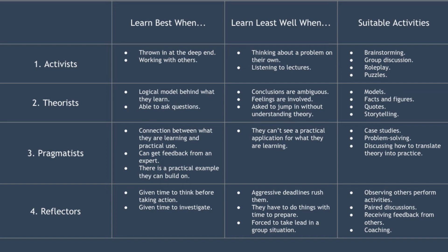Finally, we have reflectors. These are people who learn best when they can observe others and think about what they've just observed. They avoid jumping straight in and prefer to watch first. They like to collect data from many sources and perspectives, then think about it thoroughly before reaching any conclusion. They are typically cautious and like to consider all the angles before committing to action. Reflectors learn best when they're given time to think and time to investigate before they have to take any action. They learn least well when aggressive deadlines rush them, when they have to do things without adequate time to prepare, and when they're forced to take the lead in a group situation.